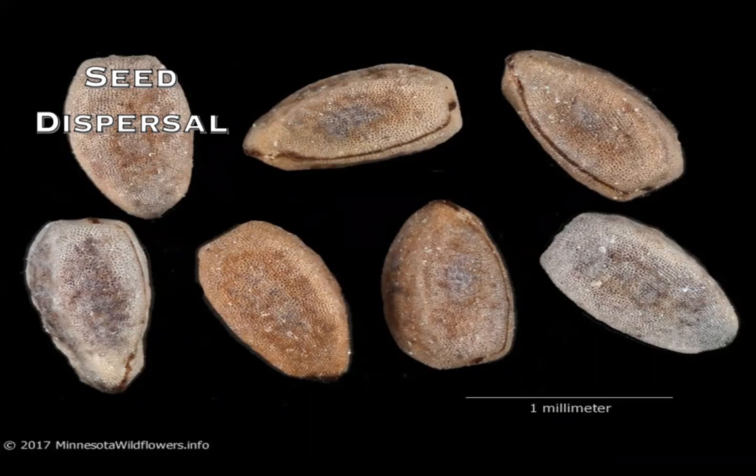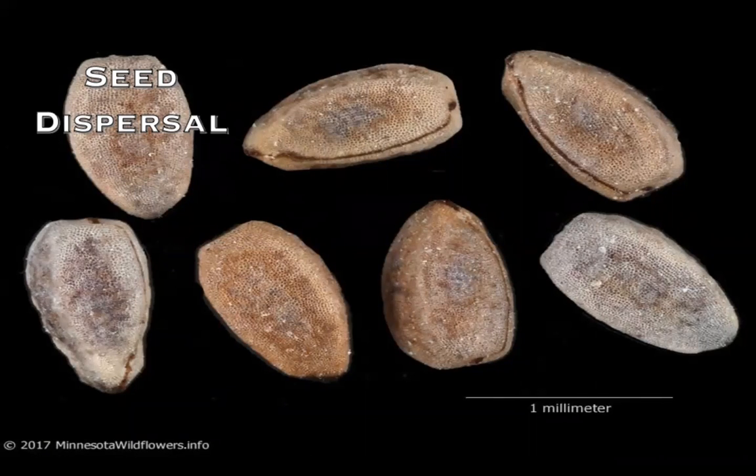Each capsule usually contains around three seeds, and the size, shape, and features of the seeds may vary by species. Besides this method of dispersal, animals and water also aid in seed dispersion.